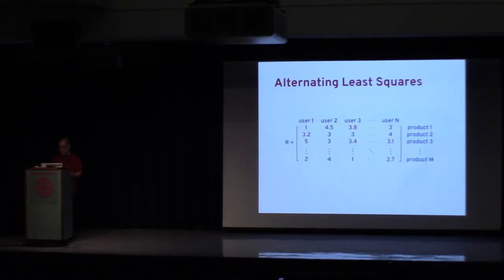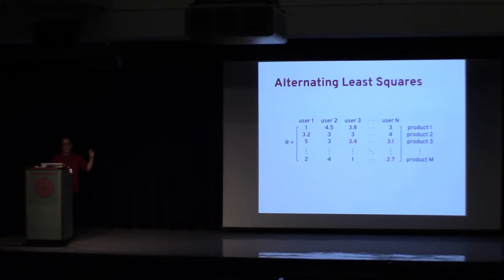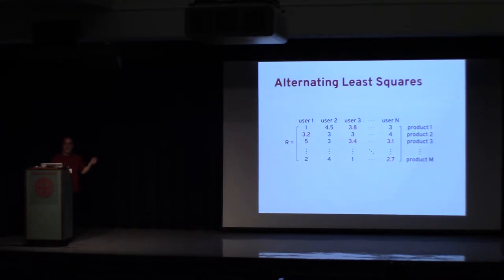In the end, what you have is the original data plus an approximation shown in red. These approximated values mathematically minimize the ALS recursion, and with enough data and enough iterations, they will be a good approximation.